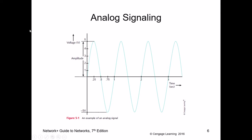Frequency is how many cycles occur in one second. Wavelength is the measure of one cycle — if you take a ruler and measure from trough to trough, that distance is the wavelength. The period is the time it takes to complete one cycle, and one over the period gives you the frequency.